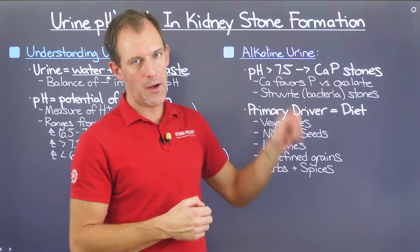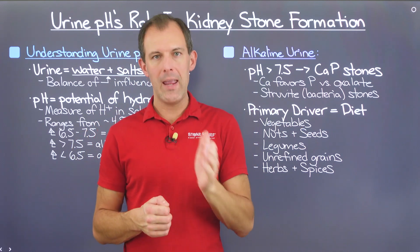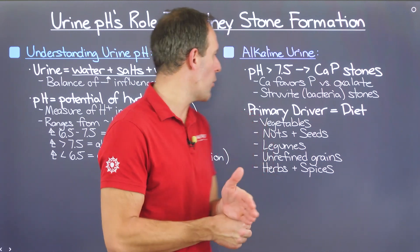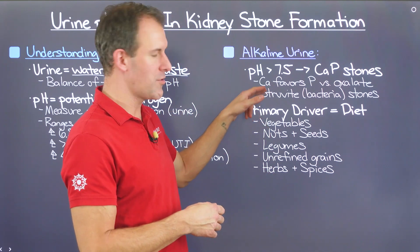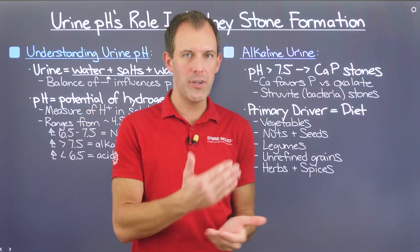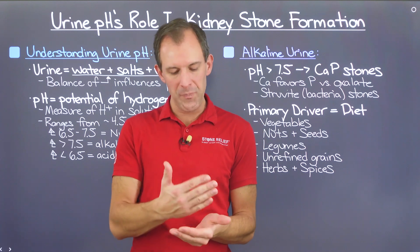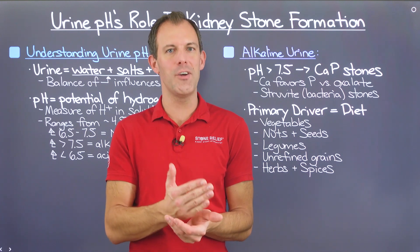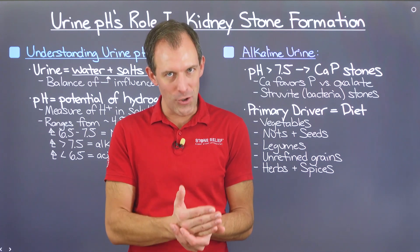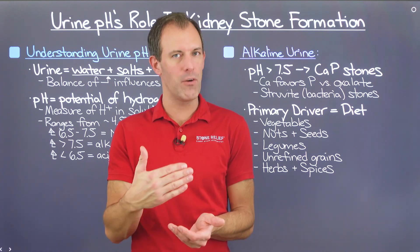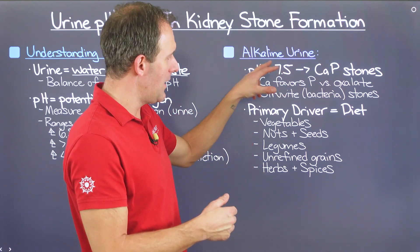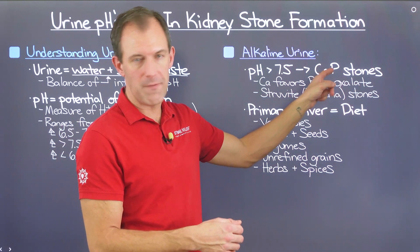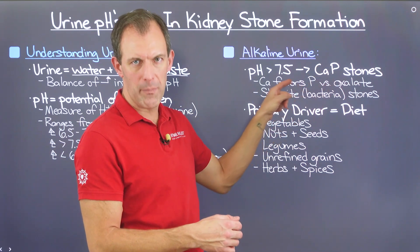The reason for this is that calcium actually favors binding with phosphate in alkaline urine, whereas it favors oxalate in neutral to acidic urine. Alkaline urine is also a potential setup for struvite, or bacterial, stones. It's a vicious feedback loop: the alkaline environment promotes bacterial growth, and those bacteria excrete elements that further alkalize the urine, perpetuating the cycle. This is why many women with recurrent UTIs experience calcium phosphate or, to a lesser extent, struvite bacterial stones.